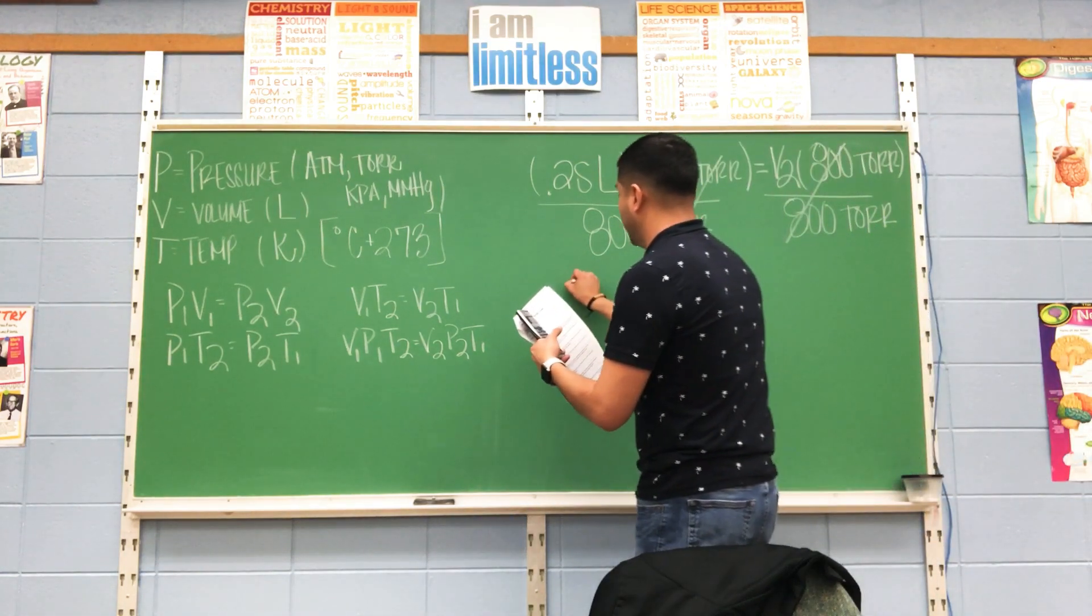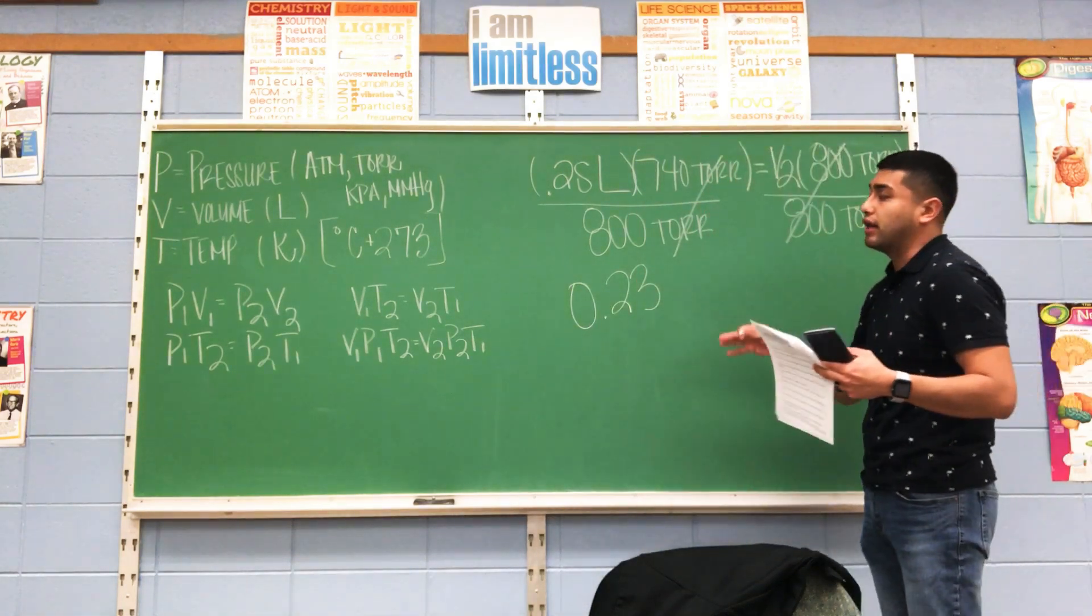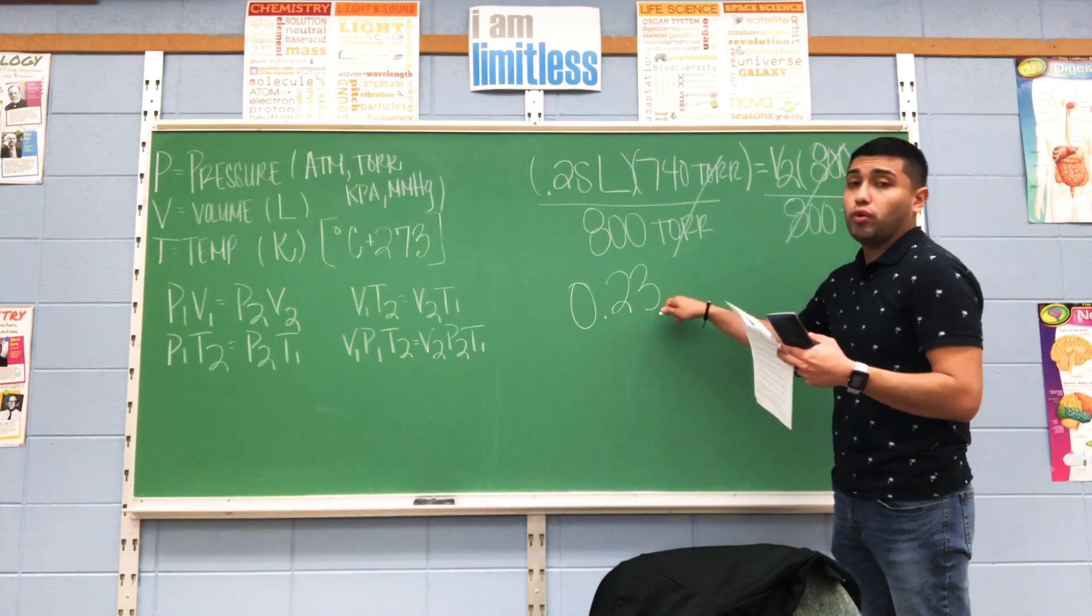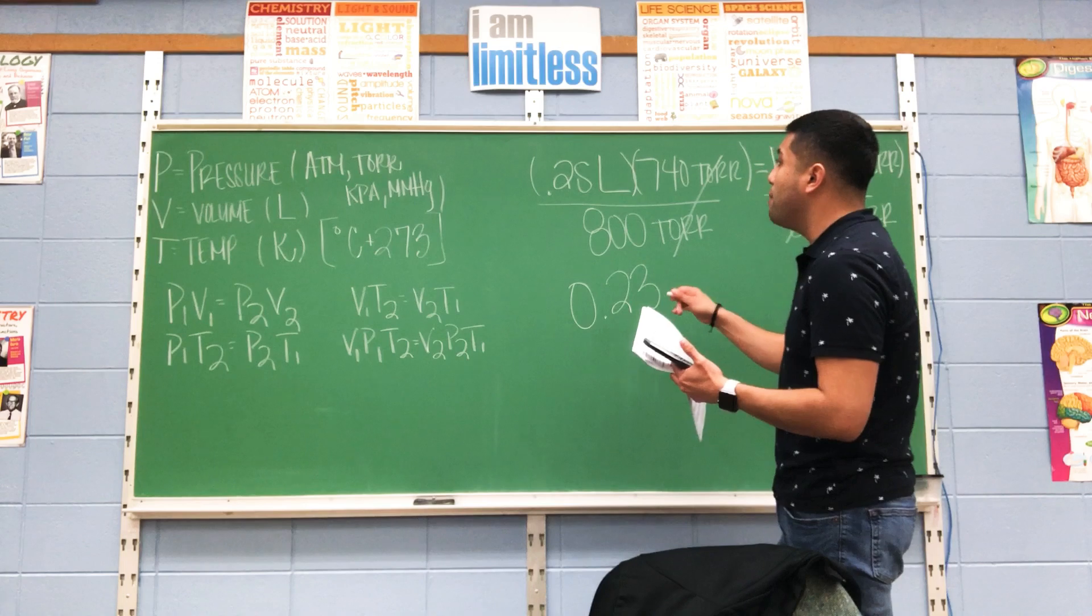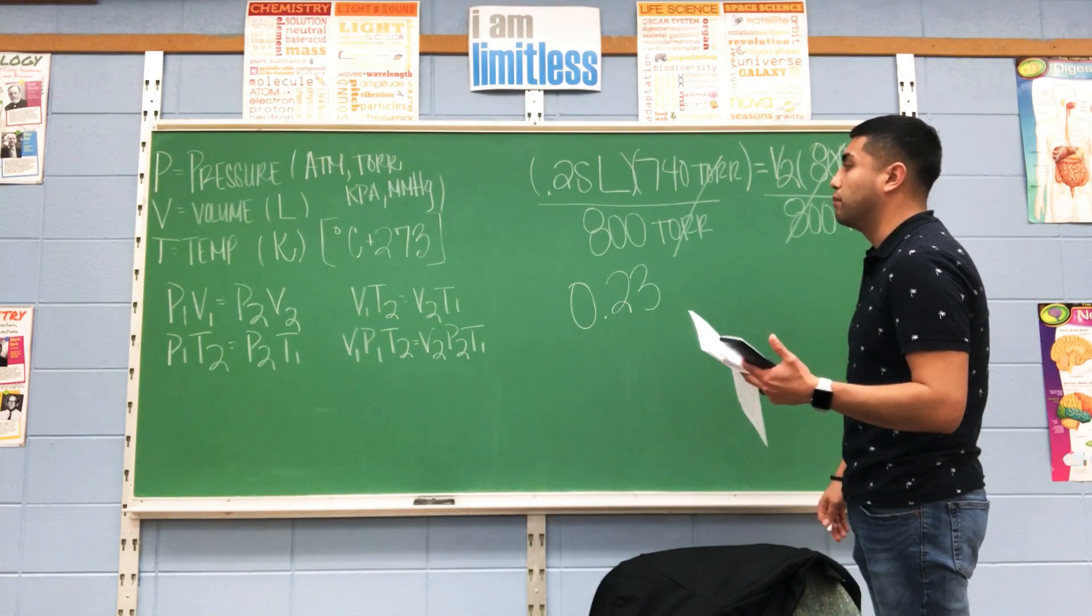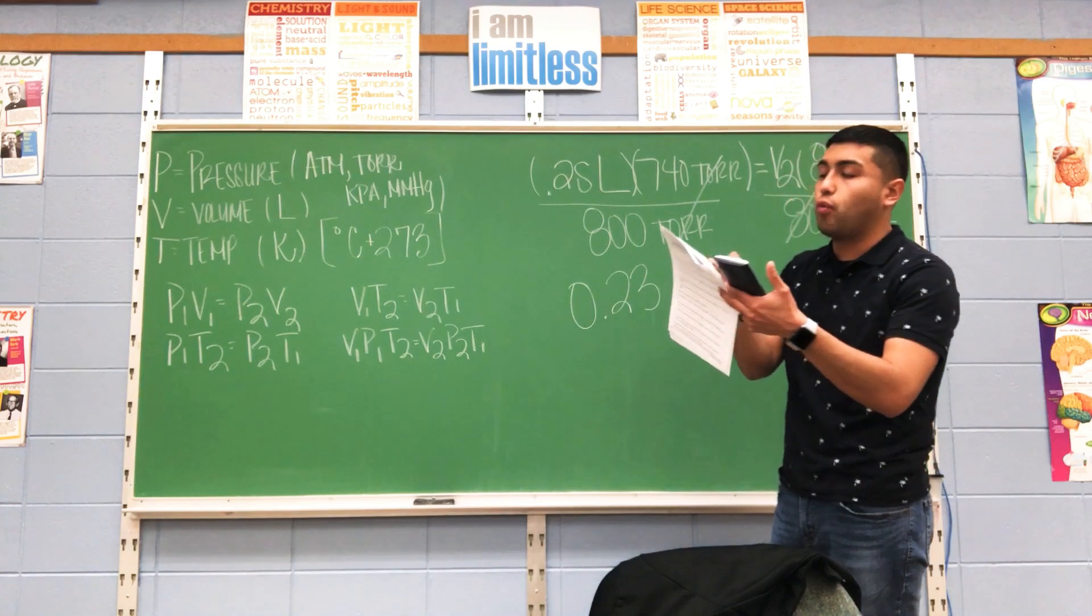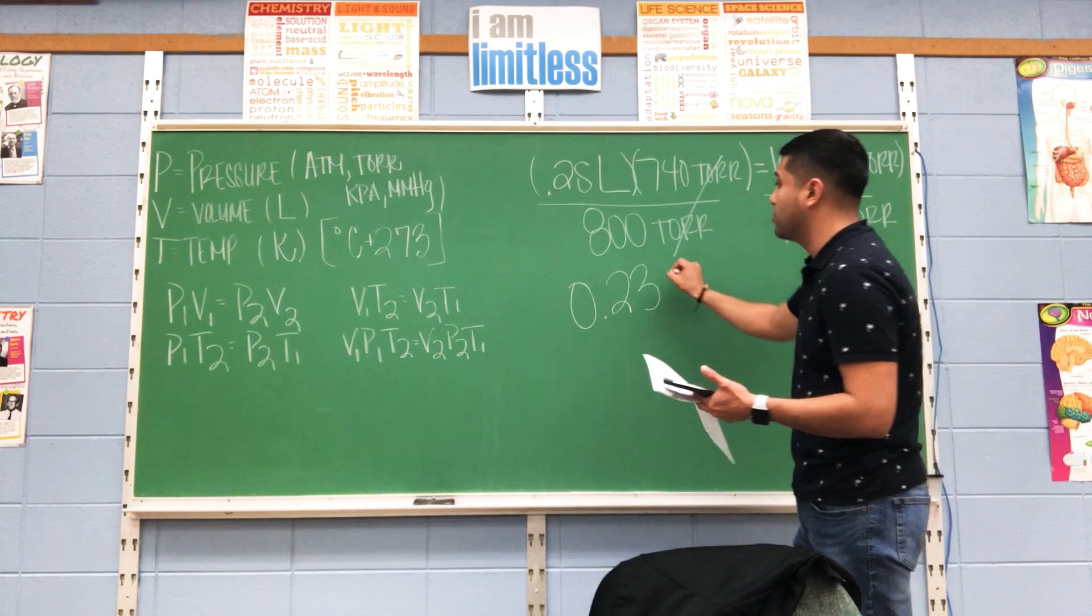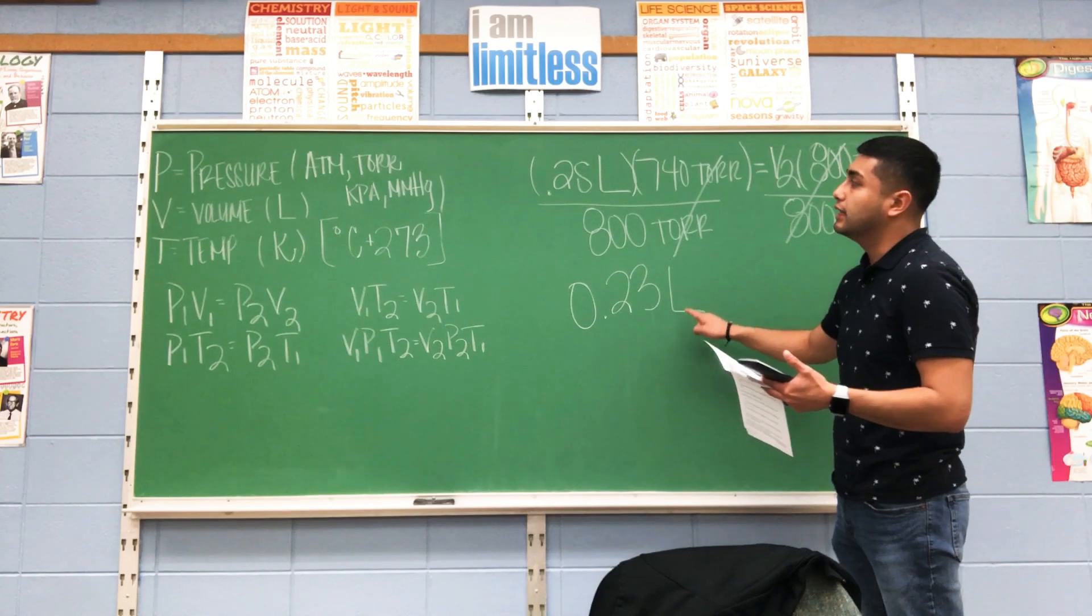Notice how the units cancel out. Then we want to multiply 0.25 by 740, and then divide by 800. You can use a calculator. That's 0.25 times 740, then divide by 800. You're going to figure out that your answer is 0.23. For gas laws in our class, we're asking for only two decimal places. My third number was a one, so it stays at three. I have to place my correct unit at the end, which is liters. So my answer would be 0.23 liters.